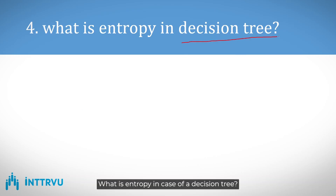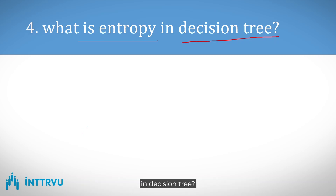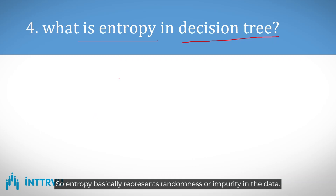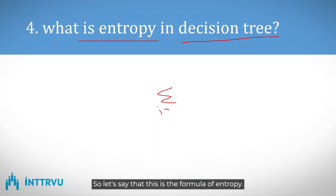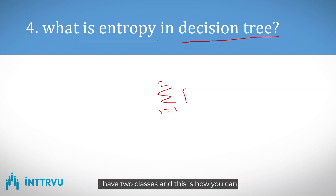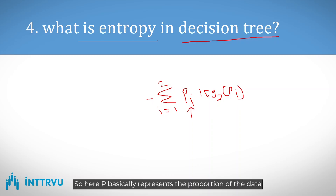The next question was on decision trees: what is entropy? Entropy is used to identify splitting — specifically, which feature should be used for splitting a node in a decision tree. Entropy represents randomness or impurity in the data, and is calculated using the proportion of data points in each class along with the logarithm of that proportion.